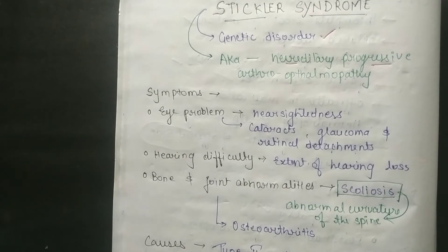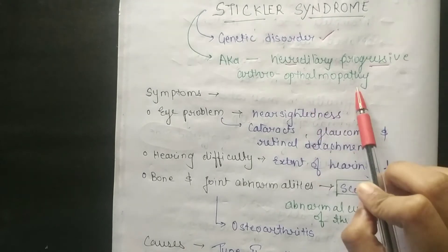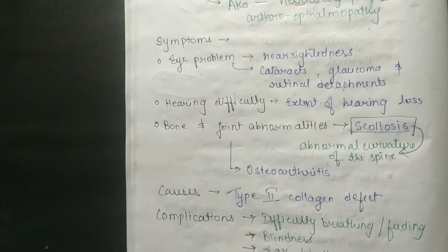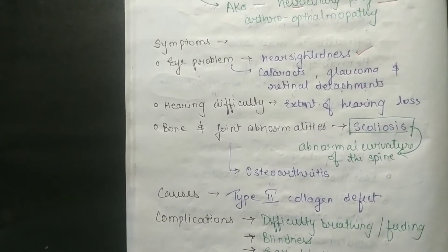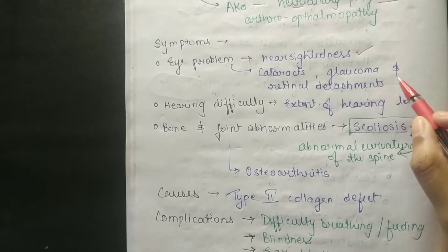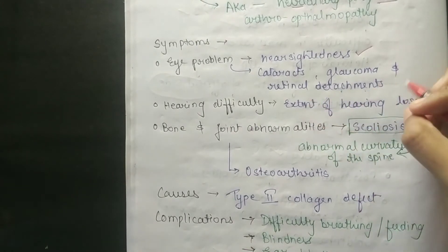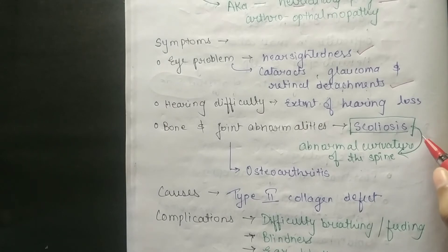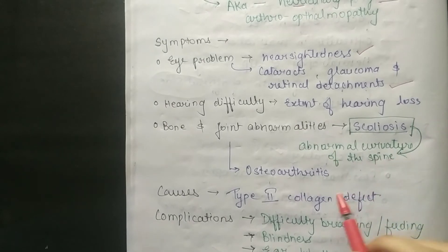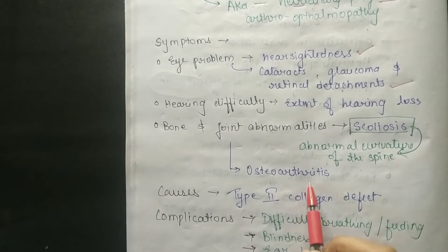Coming to the symptoms: ophthalmopathy, meaning eye-related problems — nearsightedness, cataract, glaucoma, and retinal detachment. You can also see hearing difficulty and extent of hearing loss. Bone and joint abnormalities include scoliosis, which is abnormal curvature of the spine, and osteoarthritis.